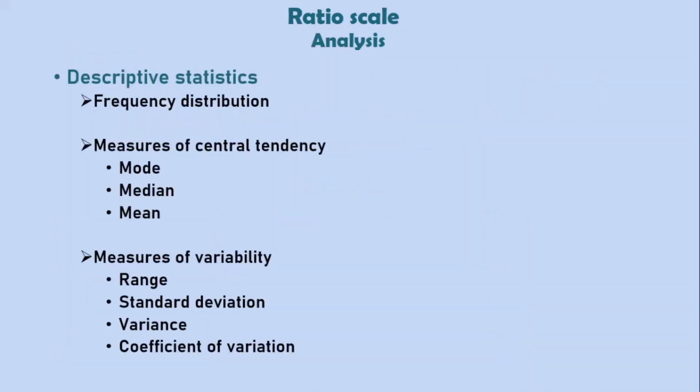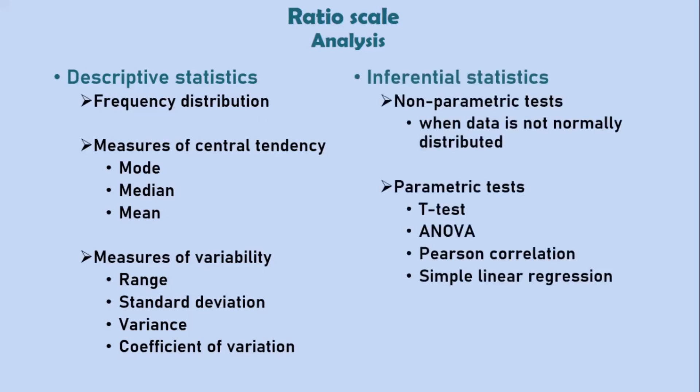Okay, so let's look at the following statistical analysis that can be conducted on variables measured on a ratio scale. We have descriptive statistics including frequency distribution. We have measures of central tendency: mode, median, and mean. Also, on the ratio scale, we can measure the range, standard deviation, variance, as well as the coefficient of variation.